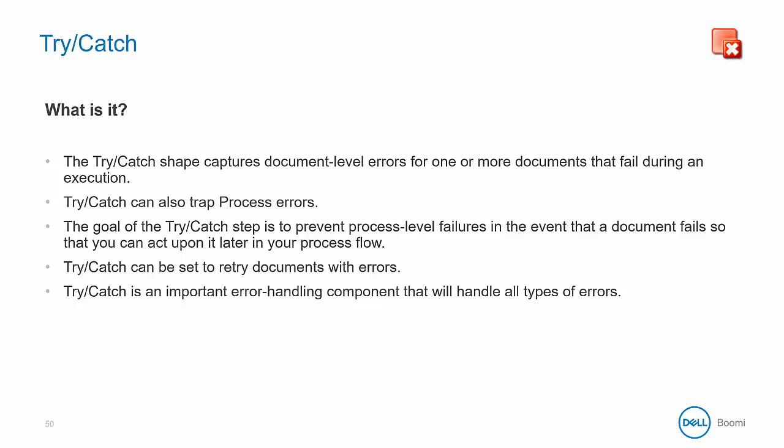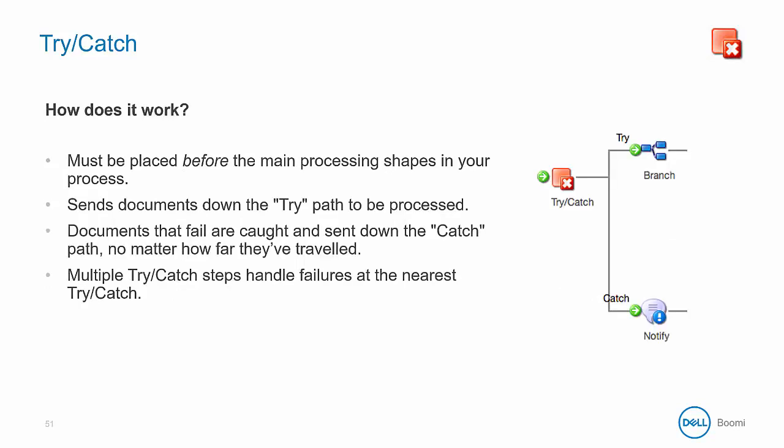The exception is the fifth retry, which waits a full 60 seconds before retrying the final time. So you can see that the try-catch shape allows you to be creative in handling potential errors. The try-catch must be placed before the main processing shapes in your process. Then all documents are sent down the try path. Any document that fails is caught and sent down the catch path, no matter how far it has traveled down the try path. Any successfully completed steps along the try path will not be rolled back.